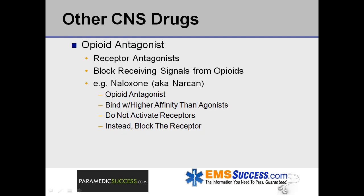Opioid antagonists act on opioid receptors by blocking the receiving signals from opioids. Naloxone, or Narcan, is a commonly used opioid antagonist that binds to the opioid receptors with a higher affinity than opioid agonists but does not activate the receptors, effectively blocking the receptor and preventing the body from responding to opioids and endorphins.